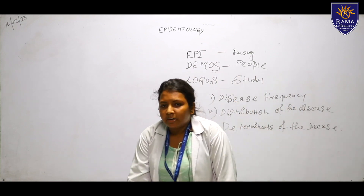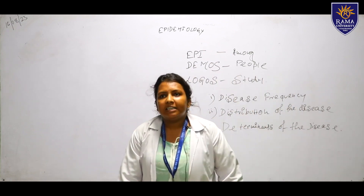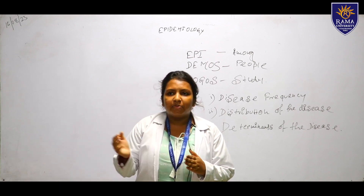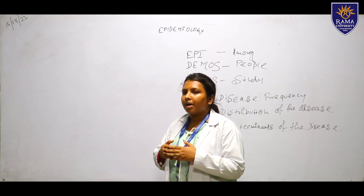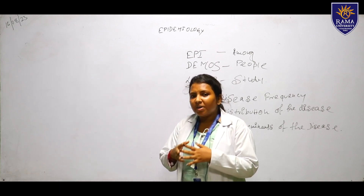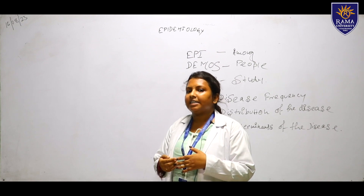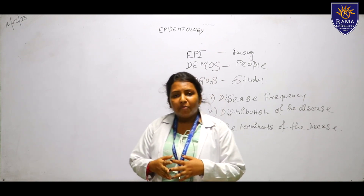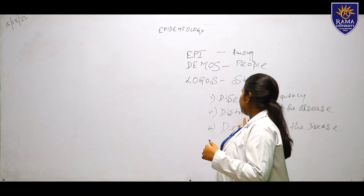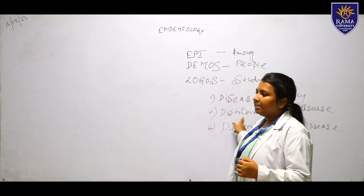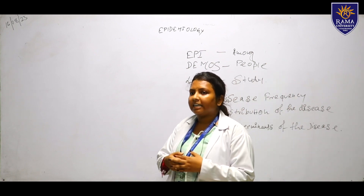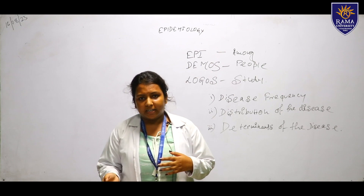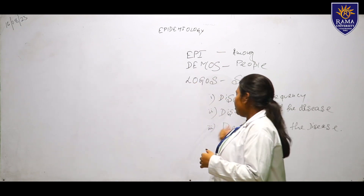For example, during COVID we could see that the disease started from China and spread from one place to another. How much frequency it spread is known as the disease frequency. Distribution of the disease refers to where a disease started and how it spread.